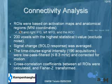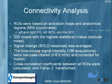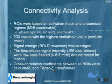For these 200 voxels, we averaged the signal — the BOLD response — and eventually we got a vector with 196 data points for each person. This time course signal intensity was corrected with a low-pass filter and corrected for motion. For the four regions, we computed cross-correlation coefficients between these regions, and finally we did Fisher Z transformation to enable statistical analysis.